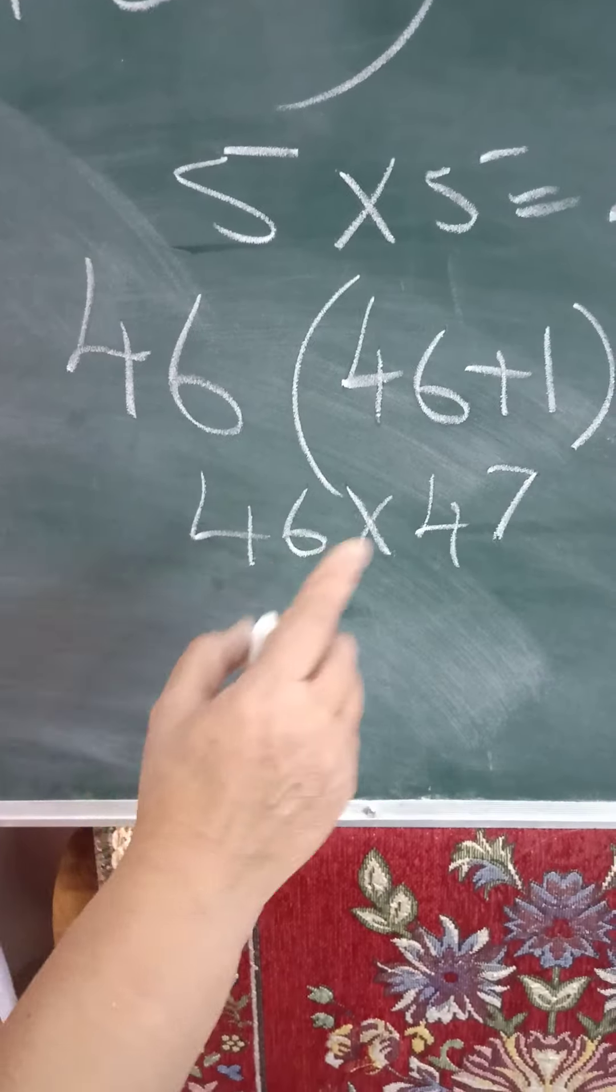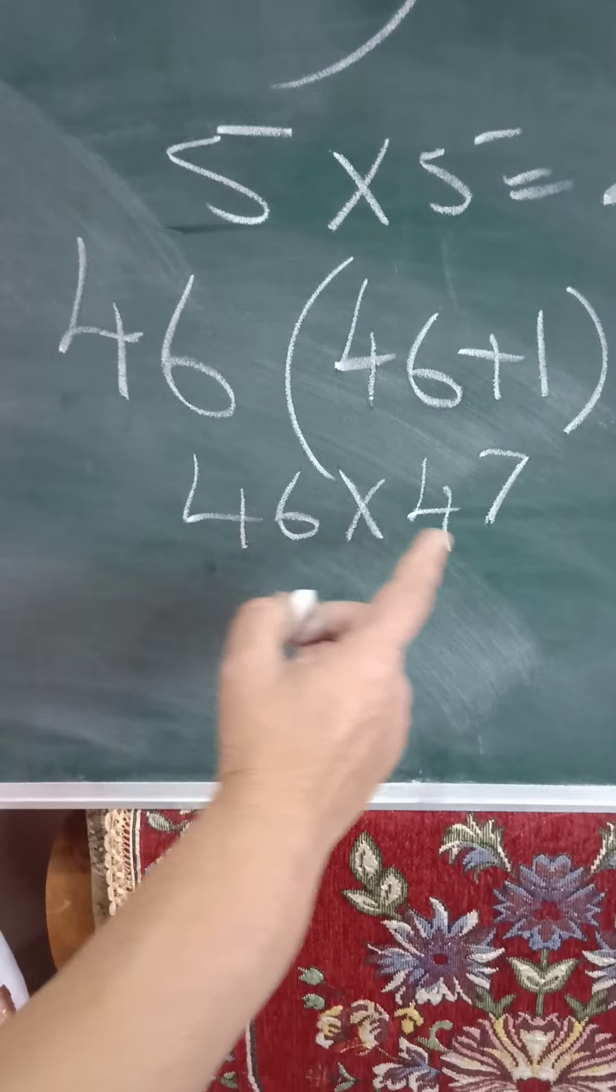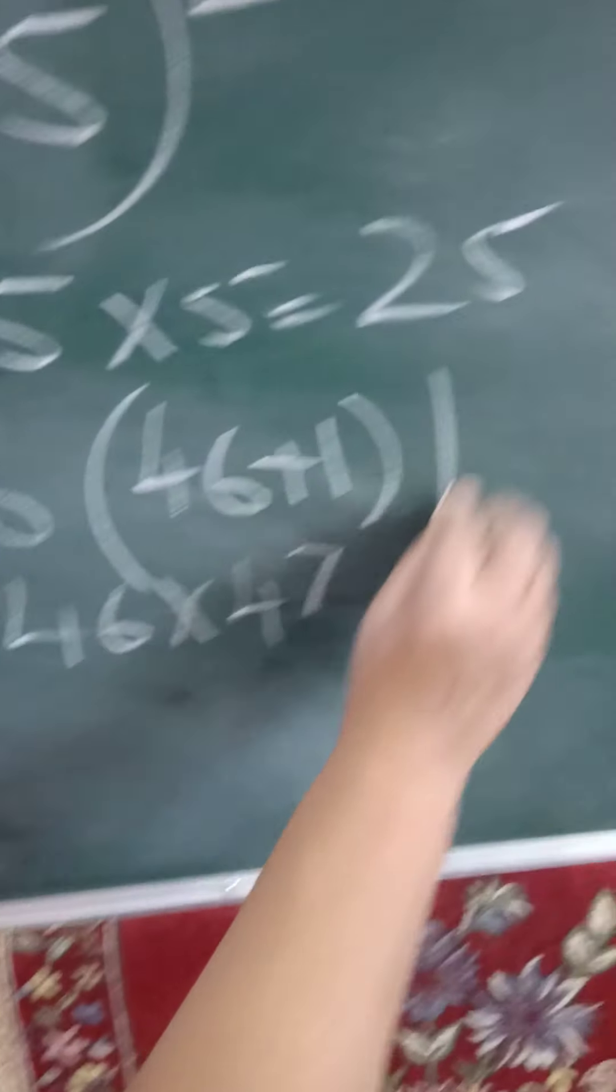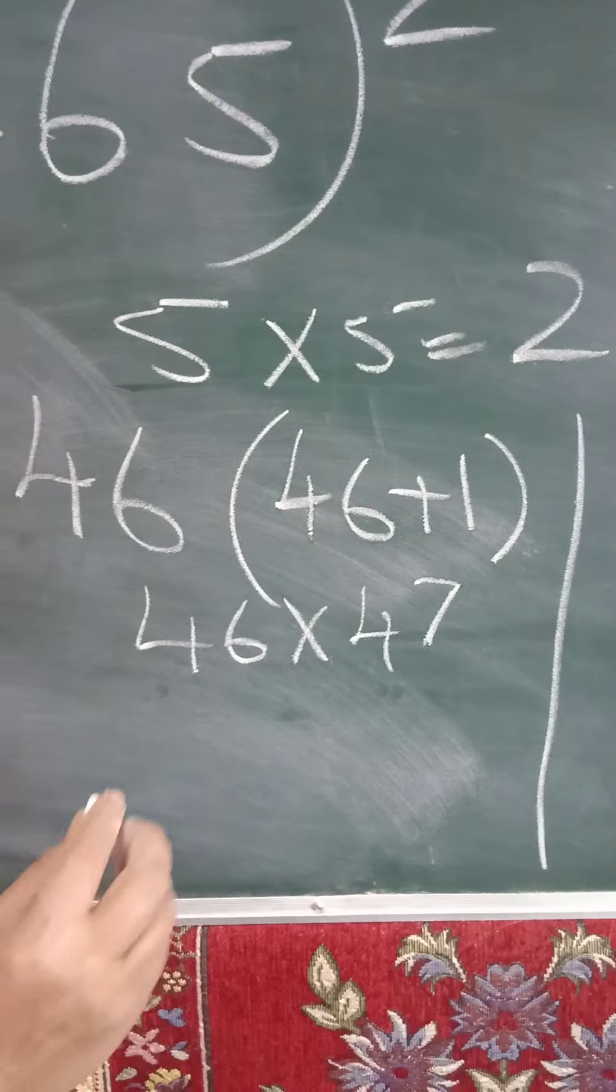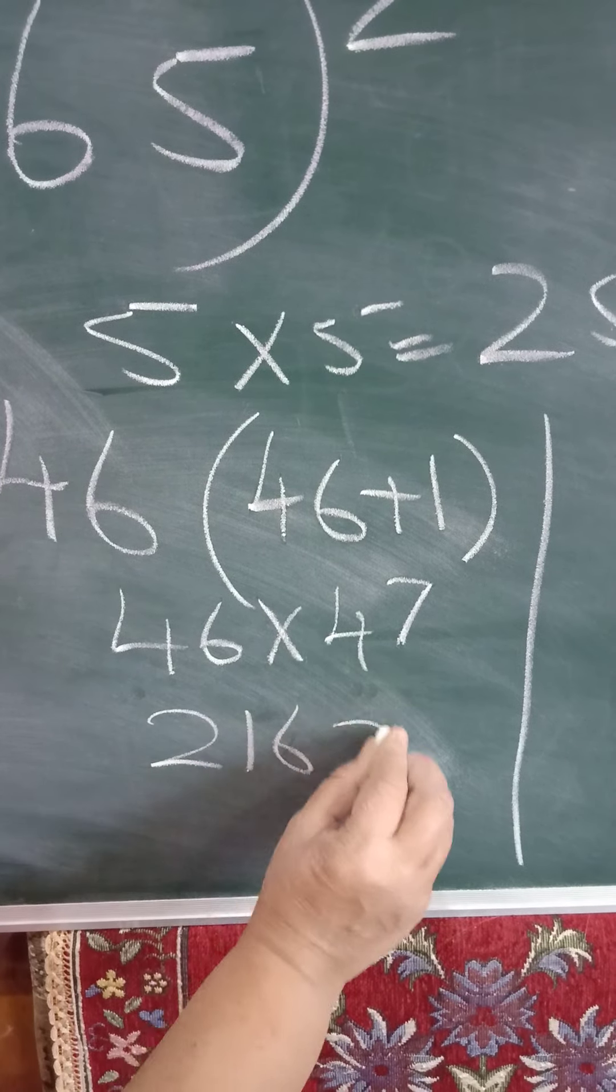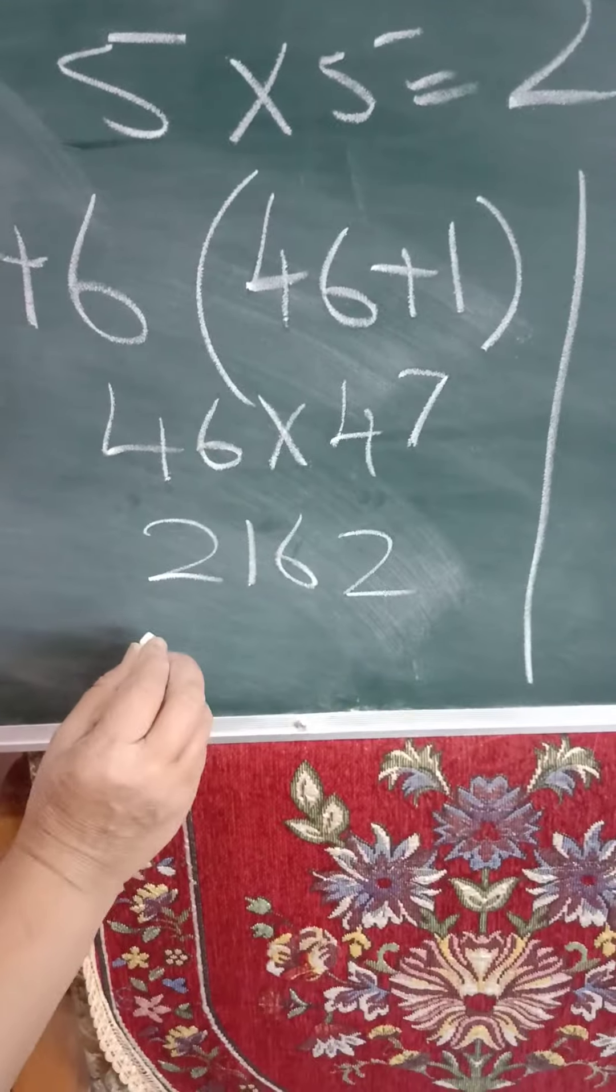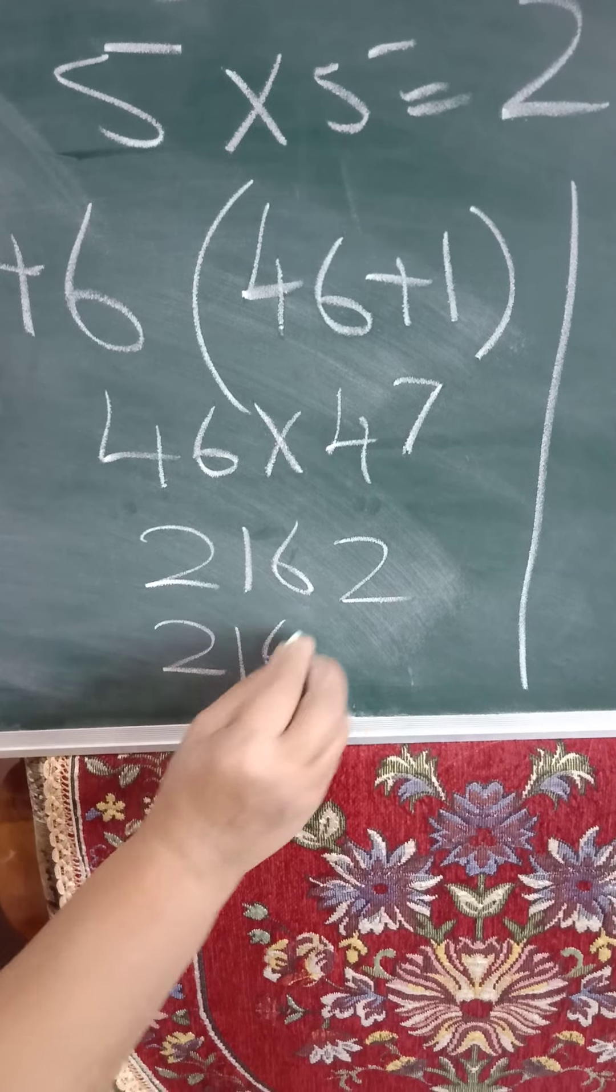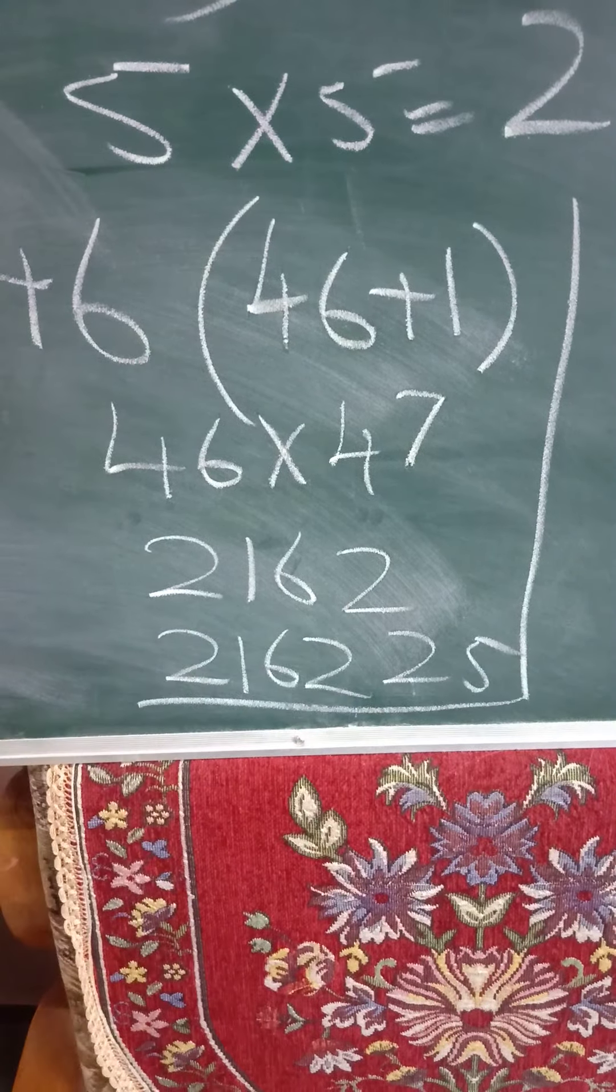Here you can find out. If you cannot do this multiplication directly, you can do in the rough column. Okay. And then the answer is 2162. Then you can write the answer. 2162 and 25. Final answer.